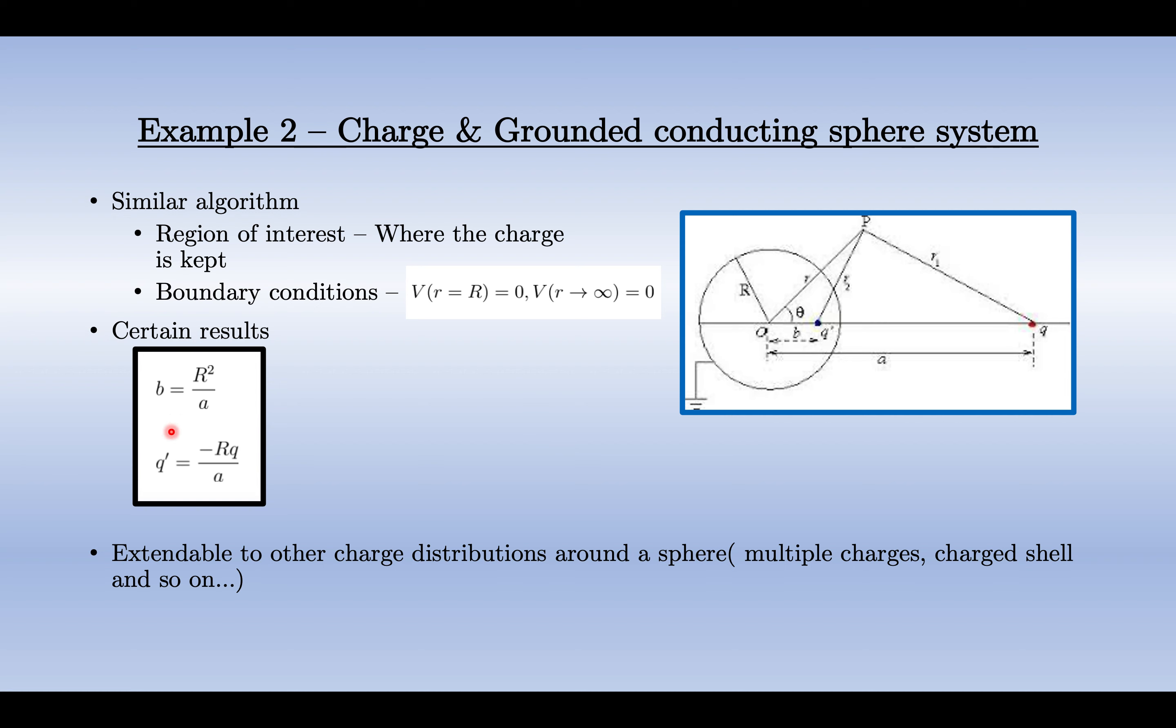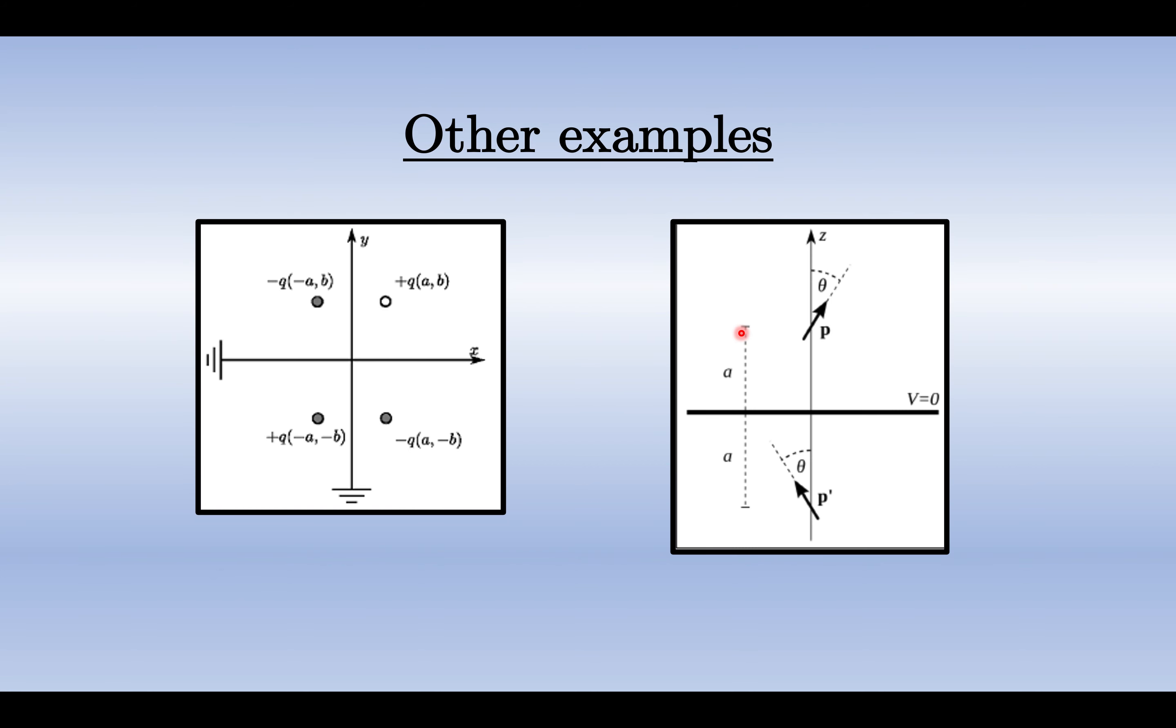This is the charge and this is the opposite to that of the original charge, and this is the distance from the center of the grounded sphere. Similarly, we can apply this technique to many other problems. Like this is the case where we have two planes which are grounded, so there will be three extra image charges and appropriately we can calculate the potential and electric field.